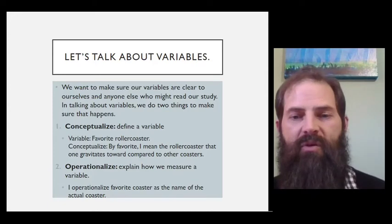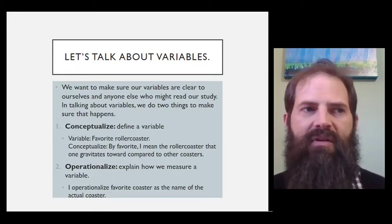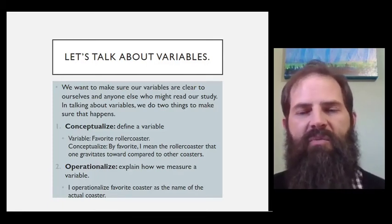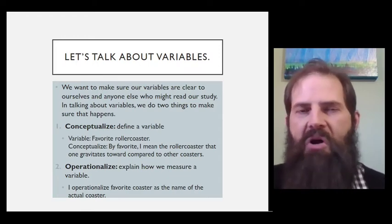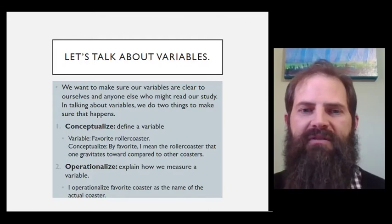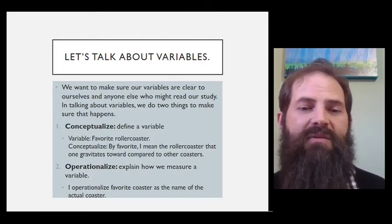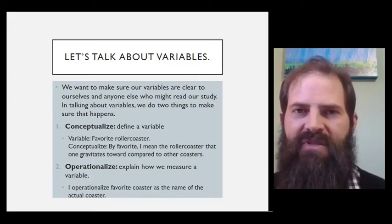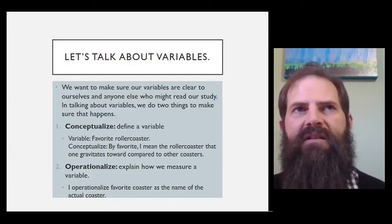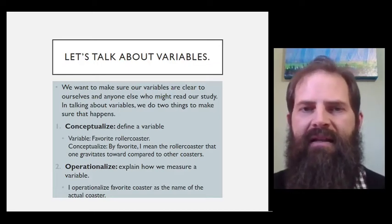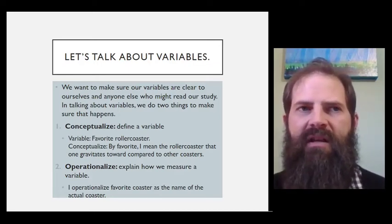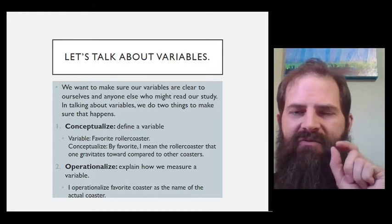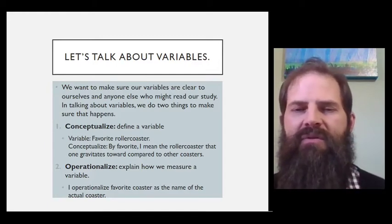Let's give a good example of this. Let's say that we want to make a variable called favorite roller coaster. And I could conceptualize in my paper the variable favorite coaster by saying by favorite, I mean the roller coaster that one gravitates toward compared to other coasters in the park. That's an okay definition. That'll work for favorite roller coaster. If we wanted to operationalize that then we've got to find a way to measure that. I operationalize favorite coaster as being the name of the actual coaster that is your favorite. So that's saying how I'm going to measure it.